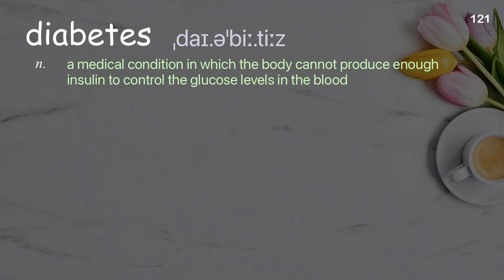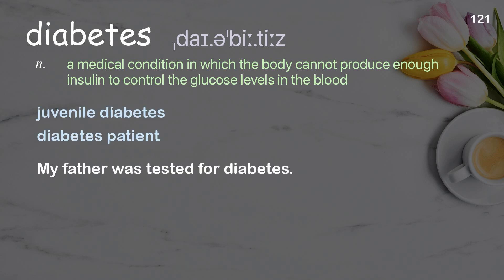Diabetes: a medical condition in which the body cannot produce enough insulin to control the glucose levels in the blood. Examples: juvenile diabetes, diabetes patient. My father was tested for diabetes.